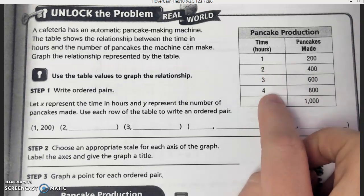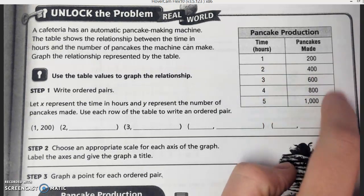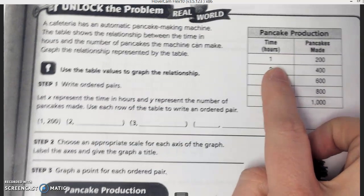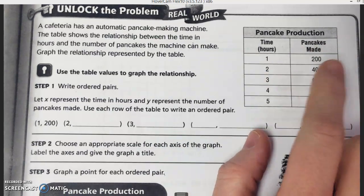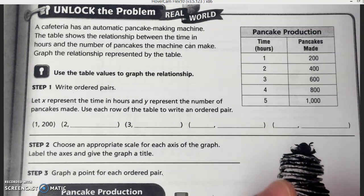Over here in the table, this tells me the time in hours and how many pancakes can be made. In one hour, there's 200 pancakes. In two hours, there's 400 pancakes, and so forth.